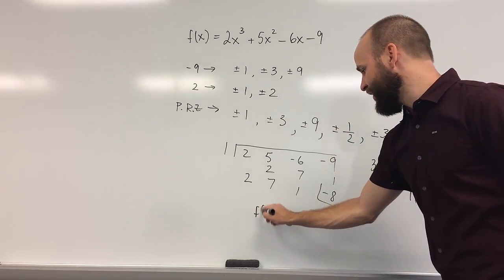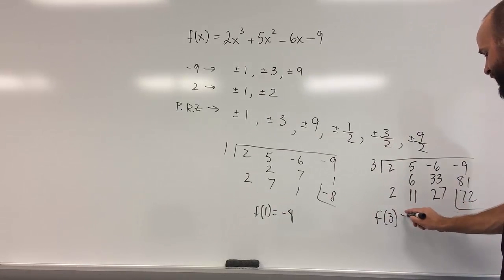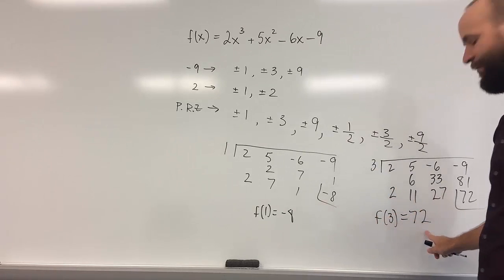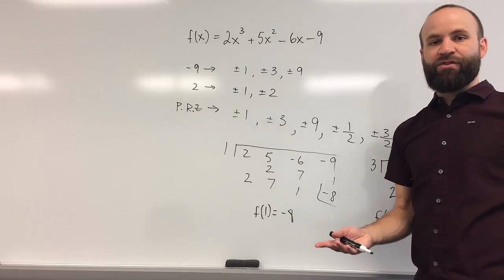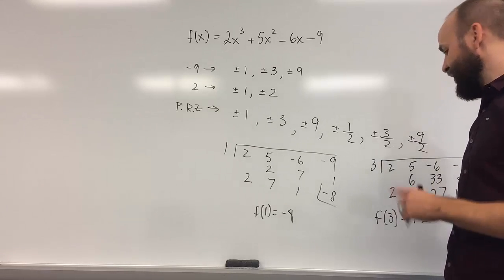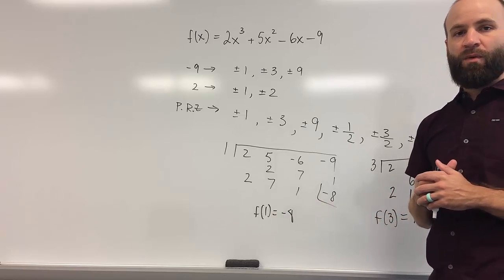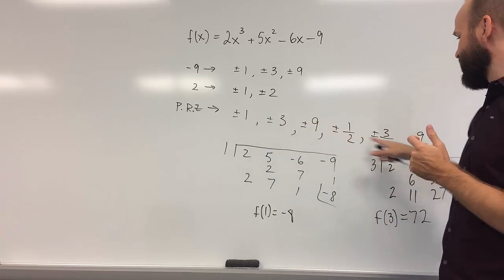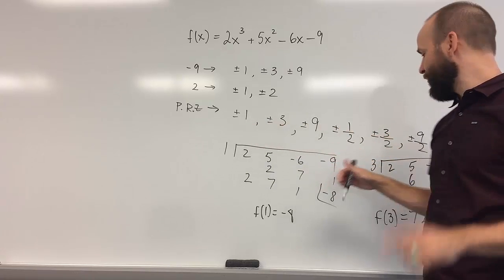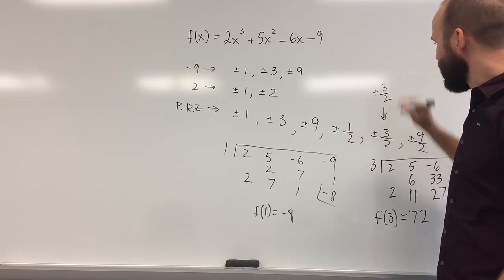But notice what we do have: f of 1 is −8 and f of 3 is 72. f of 1 is negative, f of 3 is positive. So according to the Intermediate Value Theorem — the specific version we talked about — there must be a zero between 1 and 3. If we look at our list of possible zeros, we're looking for a number between 1 and 3, and there is only one number on this list between 1 and 3: positive 3/2, or 1 and a half.